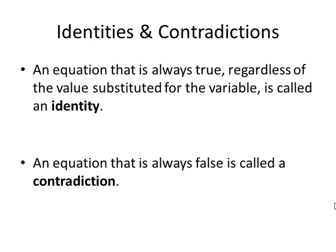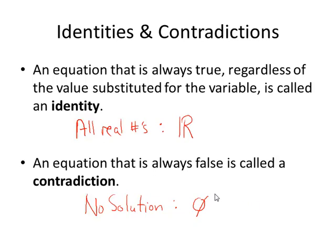Identities and contradictions. An equation that's always true regardless of the value substituted for the variable is called an identity. In that case the solution set is the set of all real numbers. And we denote the set of all real numbers with this symbol R with the extra back on it. What that means is that no matter what number you pick it's a solution. It's an equation that's true all the time. Now an equation that's always false is called a contradiction. And such an equation no matter which number you select it will not be a solution. So this type of equation has no solution. And we write that symbolically, the circle with the line through it. That denotes the null set or empty set. Now the hard part here is being able to figure out when is an equation an identity, when is an equation a contradiction. And we'll try a couple of examples to help you with that.